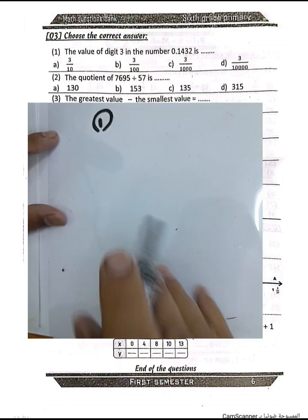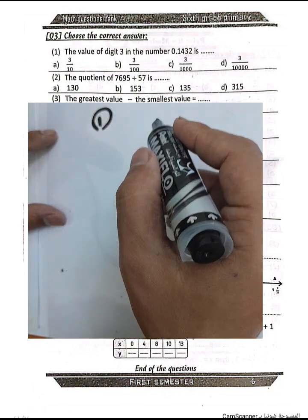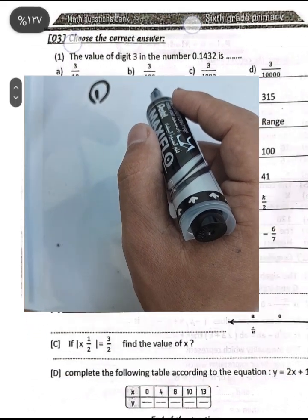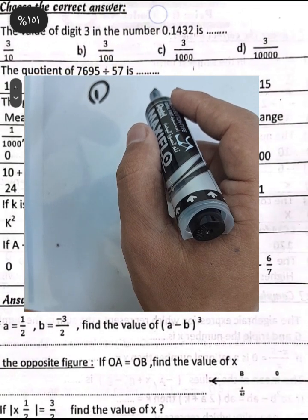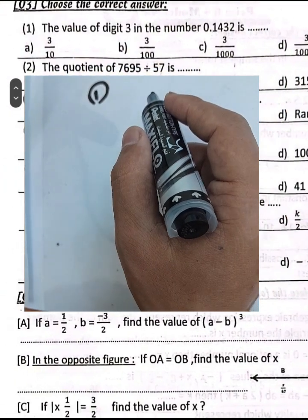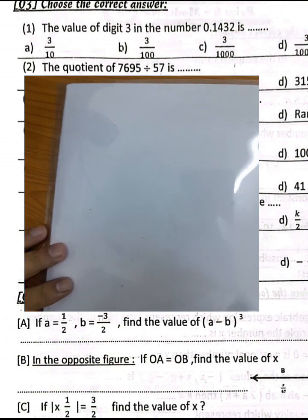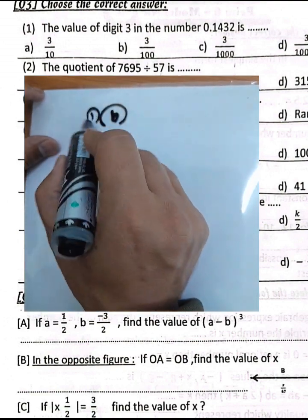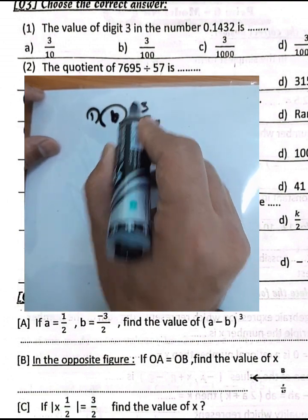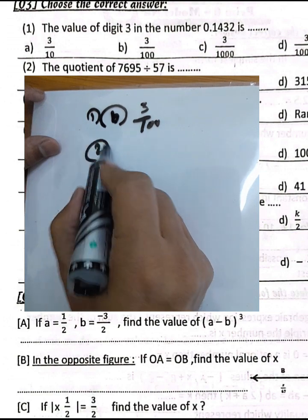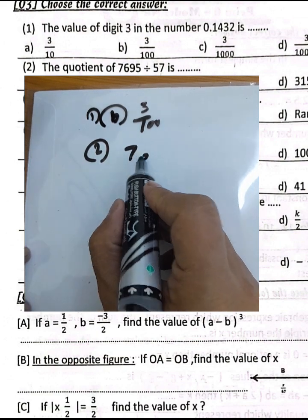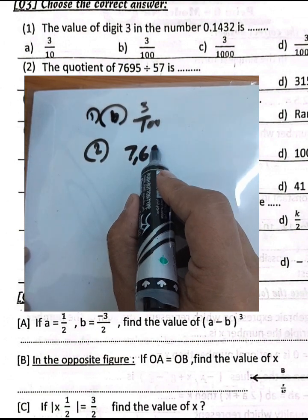Question number 1: The value of the digit 3 in the number 0.1432. The digit 3 lies in the hundredths place, so its value is 3 hundredths, which equals 0.03, or 3 over 100.